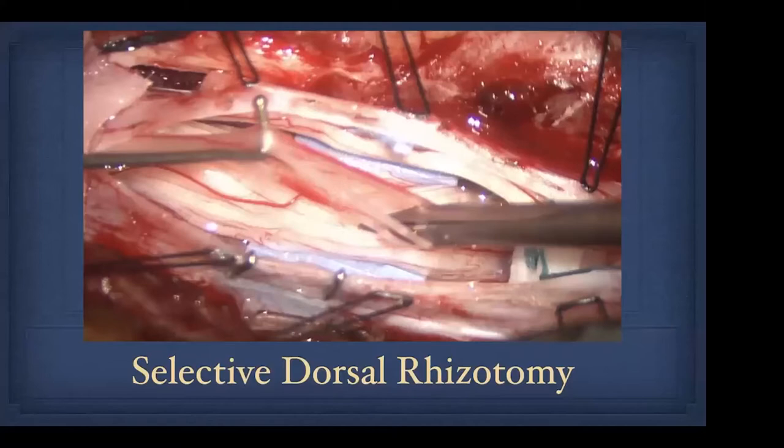Let's start with selective dorsal rhizotomy. This is an intraoperative picture. The dura is open, the nerve roots of the cauda equina are exposed. Here's the silastic sheeting we use to segregate the dorsal from the ventral rootlets, and this is a pair of micro scissors and a micro hook splitting a fascicle in half so that we could test each one.